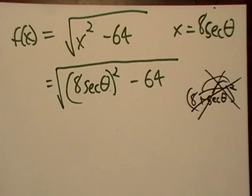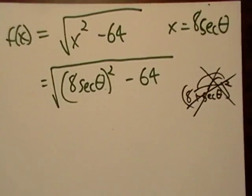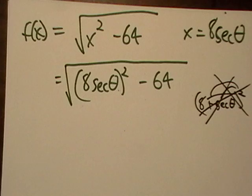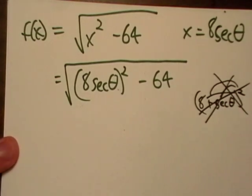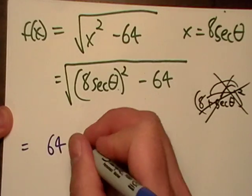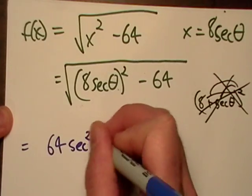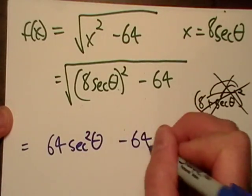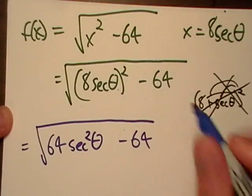I'm going to distribute the whole thing in here. And that is going to give us 64 secant squared theta minus 64, all under the radical.